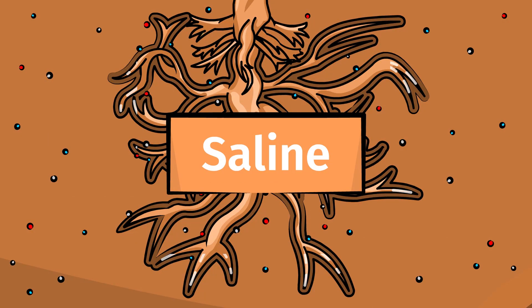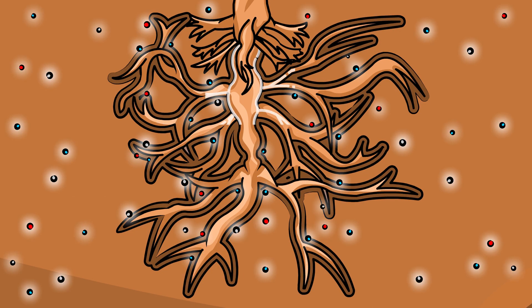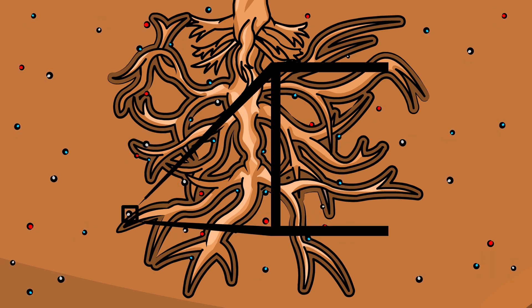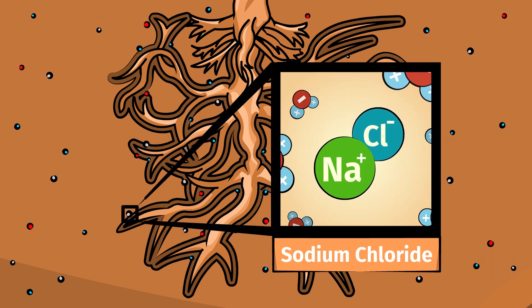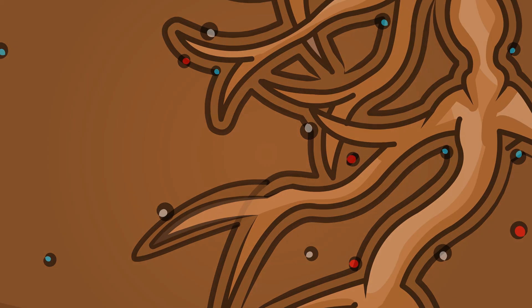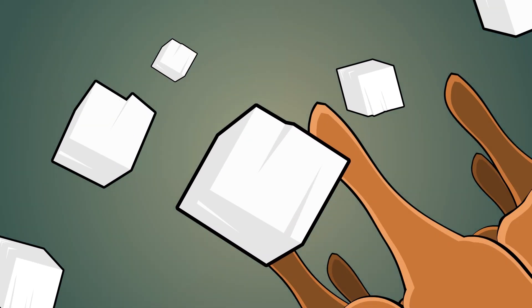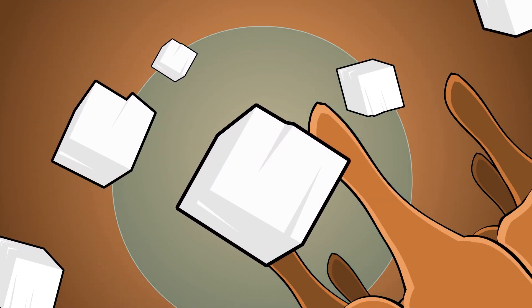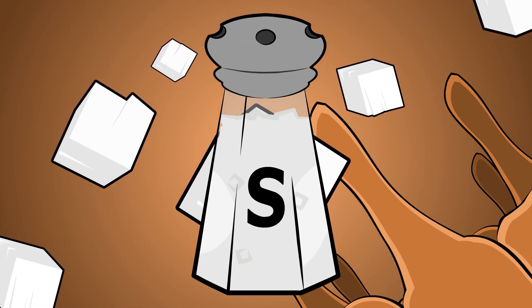Salty or saline soils can result from various sources of salt ions. Here we'll look at sodium chloride as an example of a salt that interferes with plant roots trying to take up water from soil. This is the same salt we put on our food.